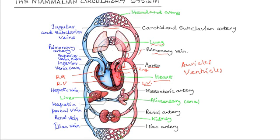So you can see the head and the upper arm regions are supplied by the subclavian artery. The carotid artery takes the blood to the head.